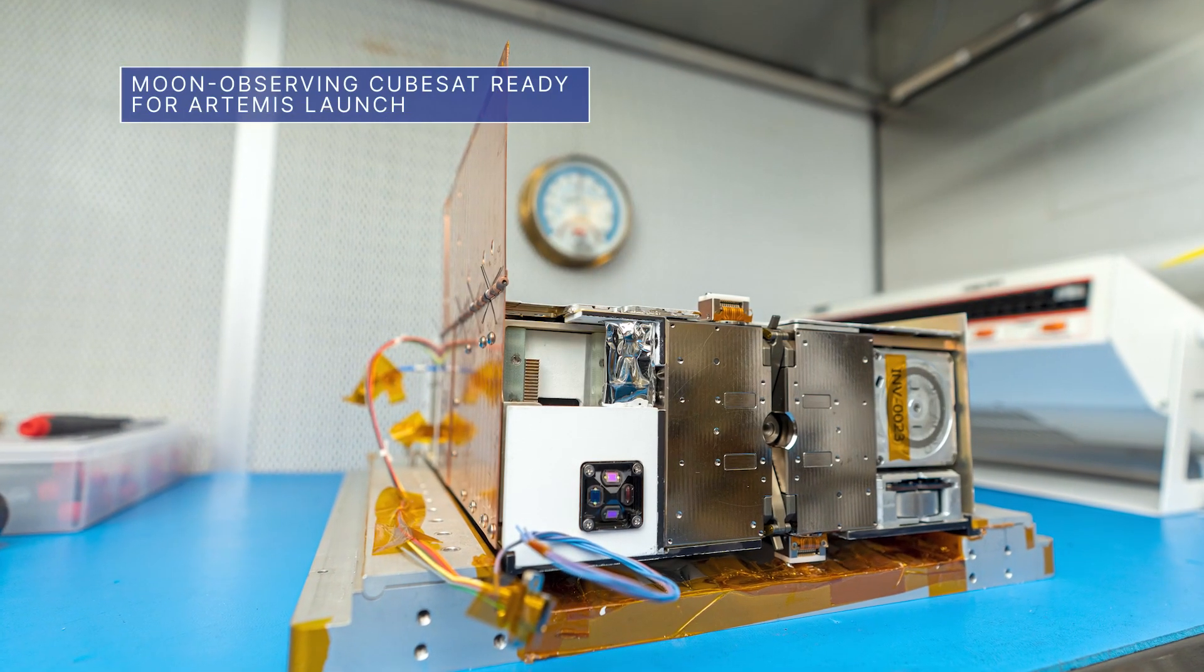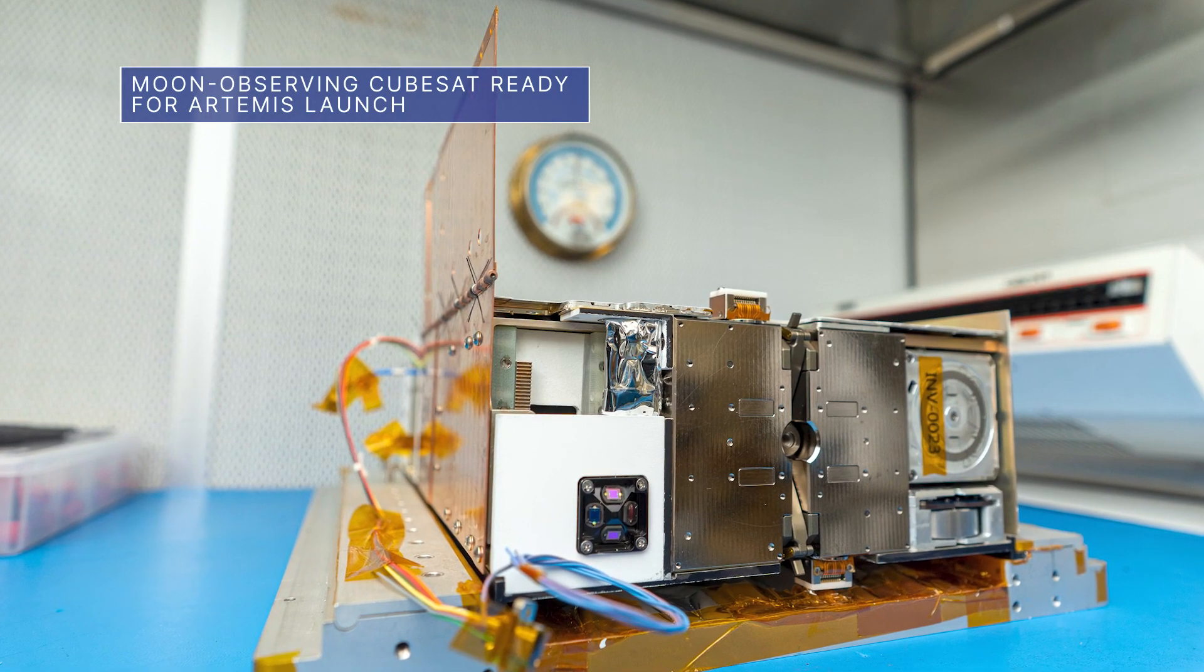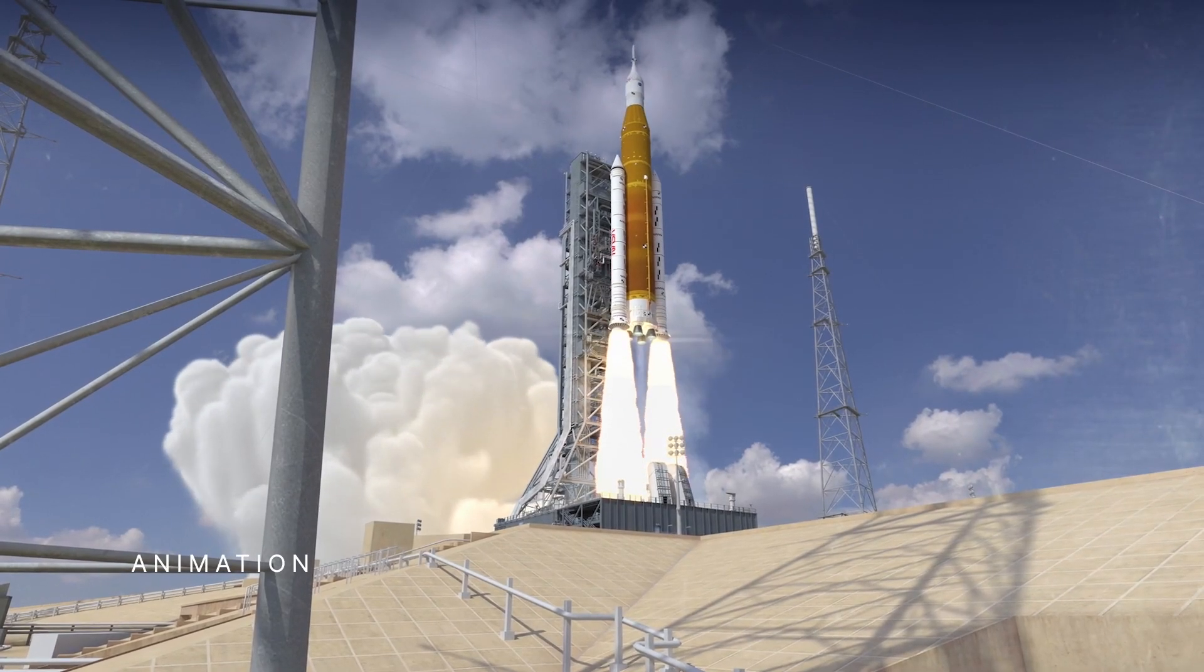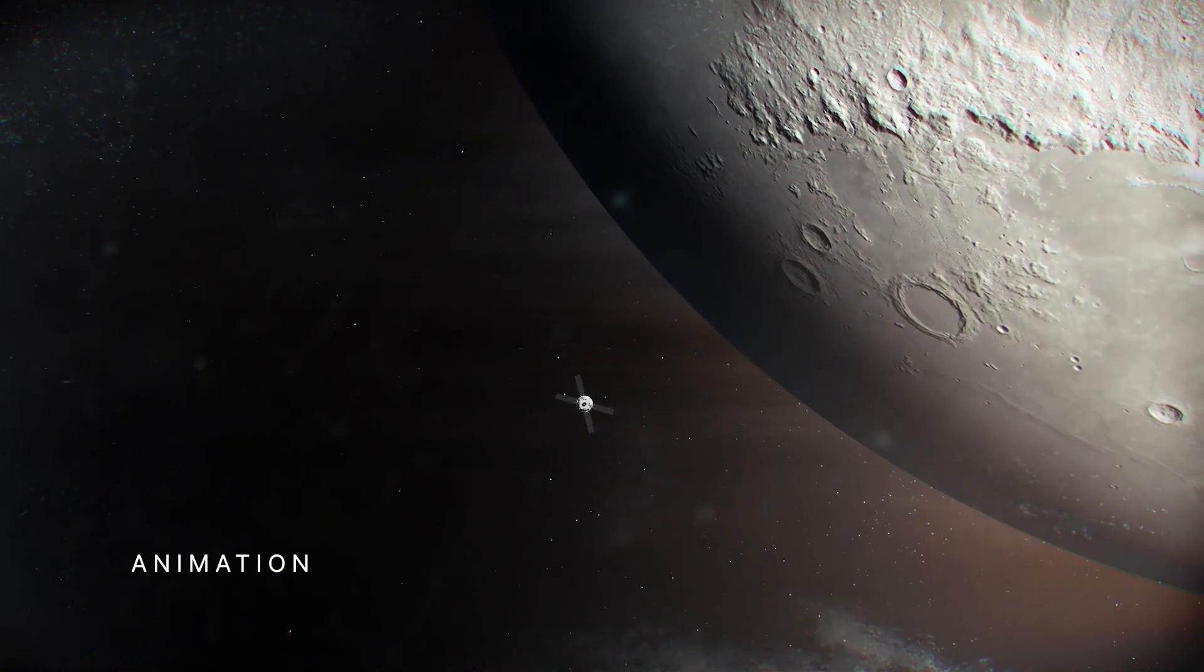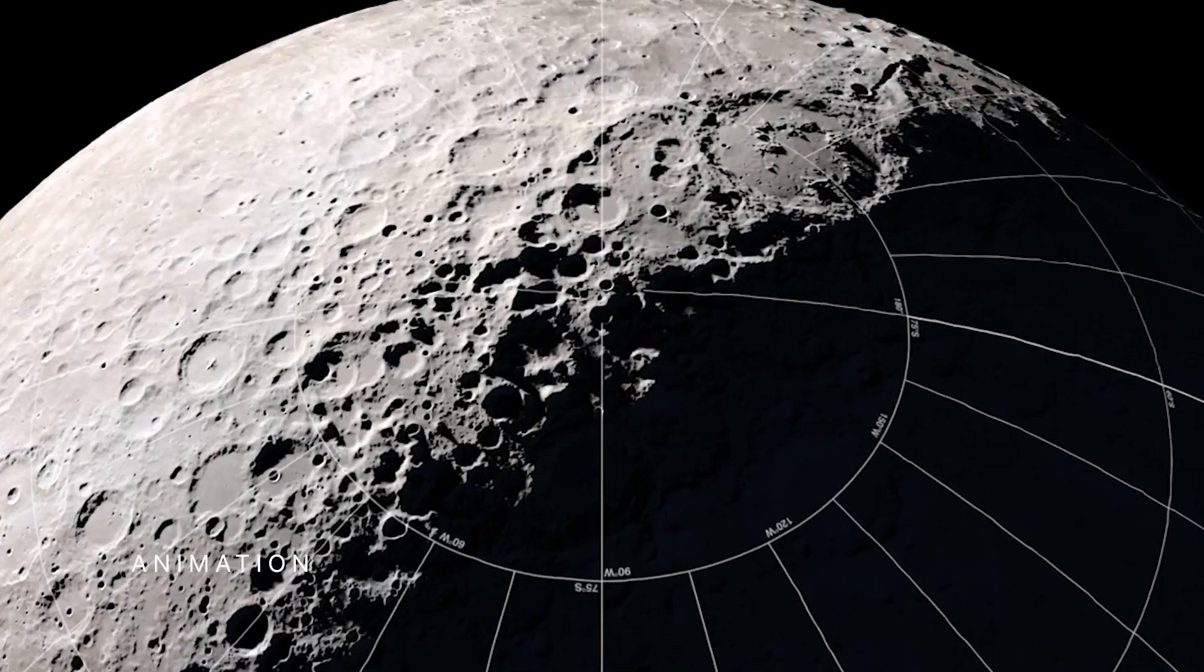NASA's Lunar Ice Cube, a water-scouting CubeSat, is preparing to hitch a ride to the moon as part of our uncrewed Artemis I mission. The small, lunar-orbiting satellite will use a spectrometer to investigate lunar ice on the surface of the moon.